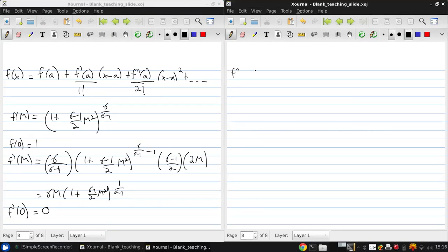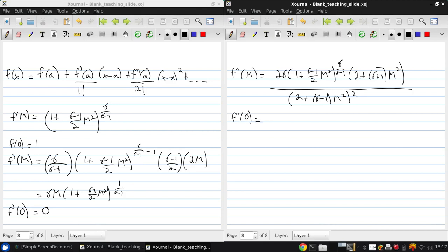Okay, let's continue on. f double prime of m is 2 gamma over (1 plus (gamma minus 1) over 2 m squared) to the power of gamma over (gamma minus 1) times 2 plus (gamma plus 1) m squared, all over (2 plus (gamma minus 1) m squared). And if we put in m equals 0 into this, we get 2 gamma times 1 times 2 over 4, which is just gamma.